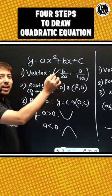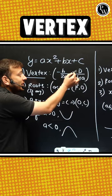first you need vertex, which is minus b by 2a comma minus d by 4a, where d is discriminant.